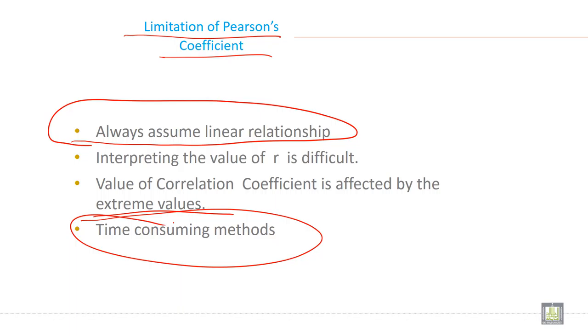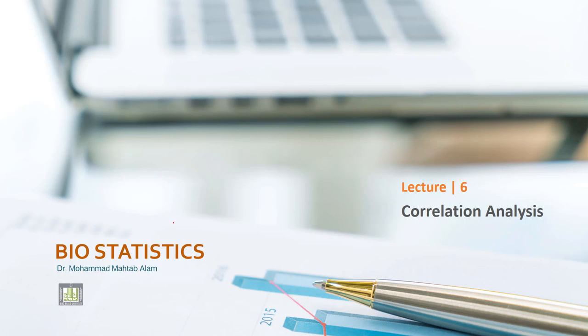If you are calculating through software like SPSS or Excel, then it is very easy to calculate. But manually, it is very difficult to calculate and it is very difficult to remember the formula of Pearson correlation.